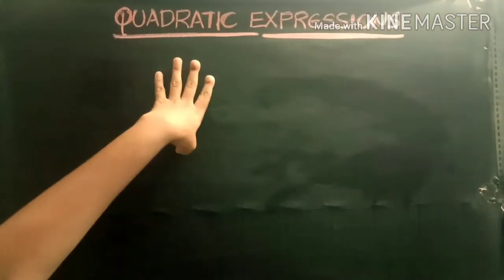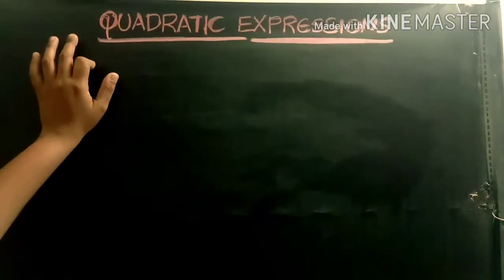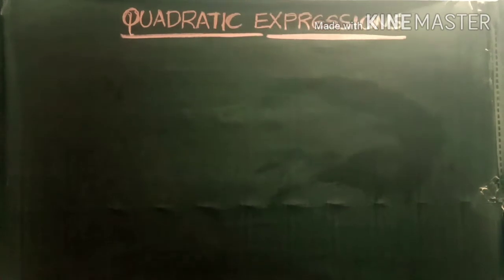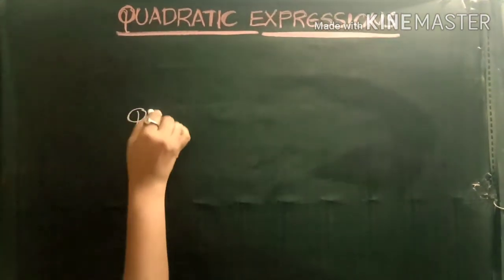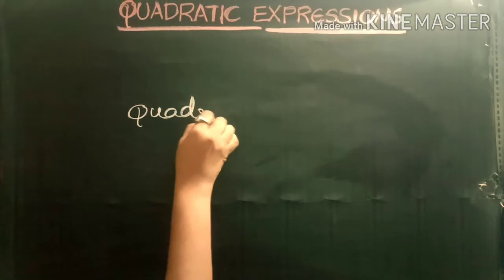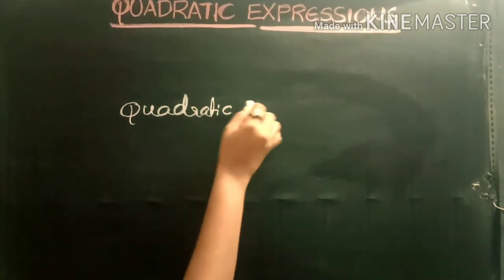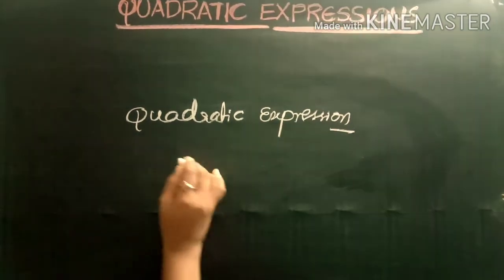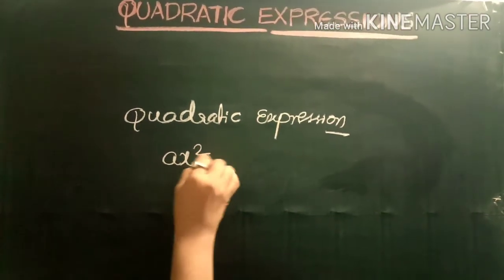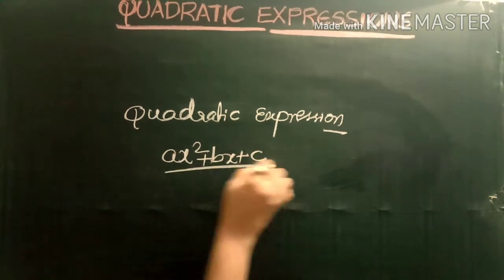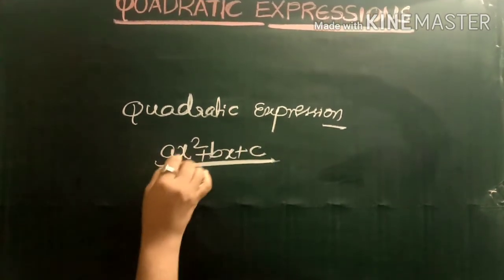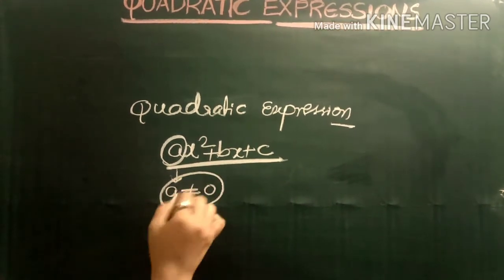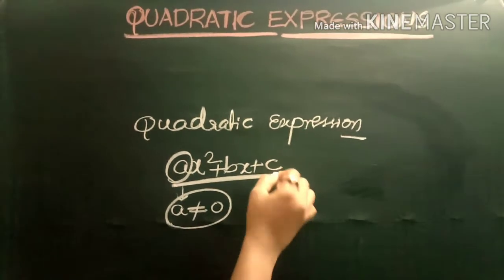The next chapter is quadratic expressions — this is the third chapter of Maths 2A. A quadratic expression means a polynomial in the form ax² + bx + c. This is called the quadratic expression, where a is not equal to 0. If a equals 0, then ax² + bx + c reduces to bx + c, which is a linear expression. So a ≠ 0 is required for it to be quadratic.